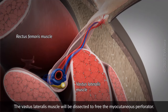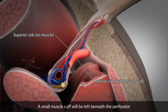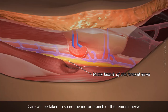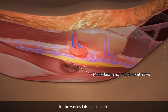The vastus lateralis muscle will be dissected to free the myocutaneous perforator. A small muscle cuff will be left beneath the perforator, to identify the orientation and prevent twisting and injury to the perforator. Care will be taken to spare the motor branch of the femoral nerve to the vastus lateralis muscle.